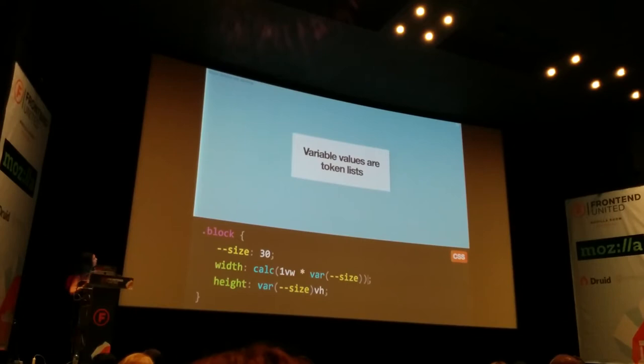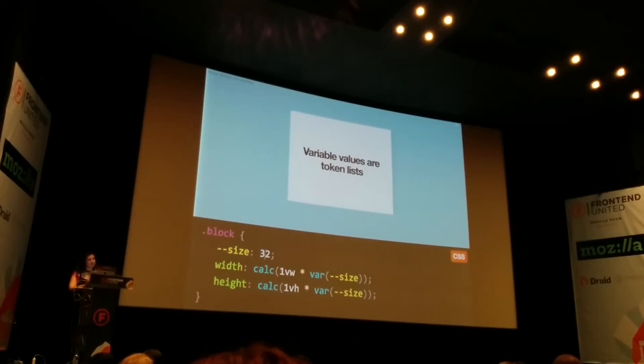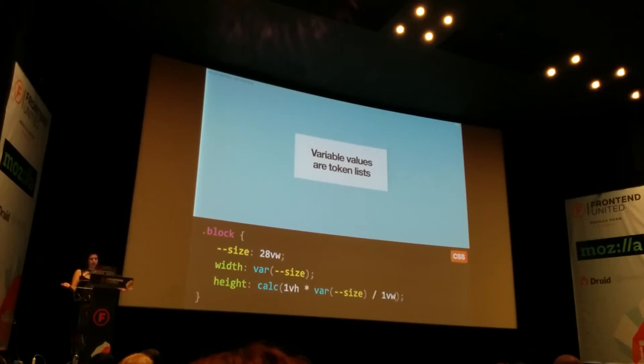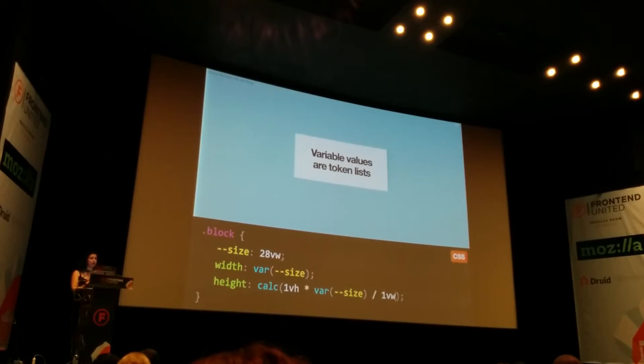Now it works — and you can do the same with `vh`. It's kind of horrible, but it works. You might think: I can use `vh` here and that helps get rid of the first `calc`, and then divide by `1vw` — like primary school math, right? No. As is also common with CSS, what you expect to work doesn't work. The reason is that you can't divide by lengths in `calc`, only by numbers.